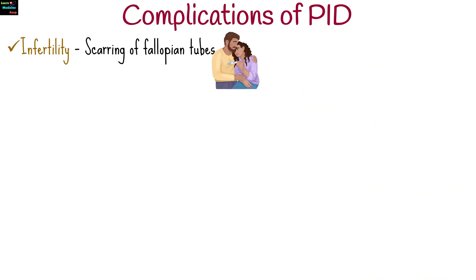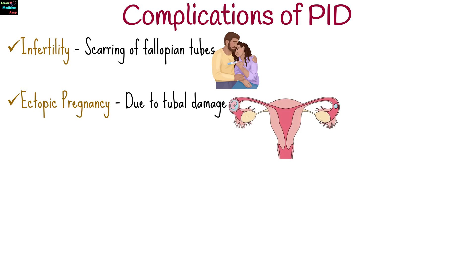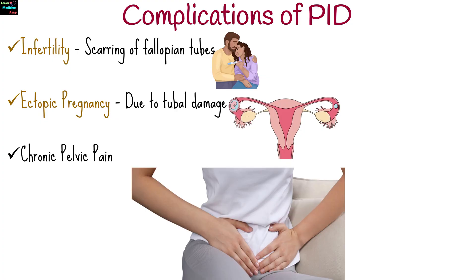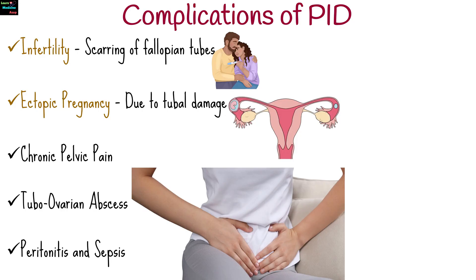If untreated, PID can lead to infertility, as scarring of fallopian tubes may block fertilization. Other complications include ectopic pregnancy due to tubal damage, adhesions and scarring causing persistent pain, tubo-ovarian abscess, peritonitis, and sepsis.